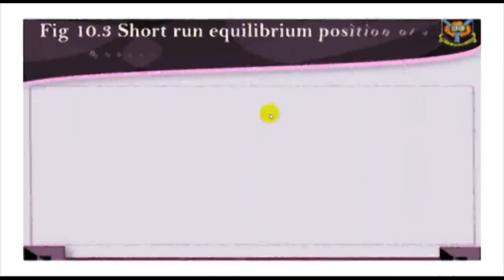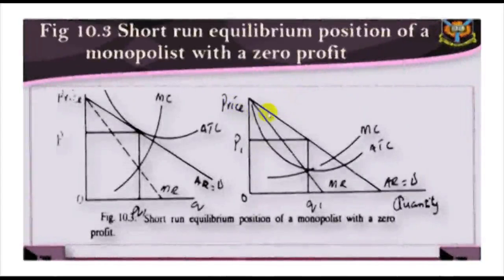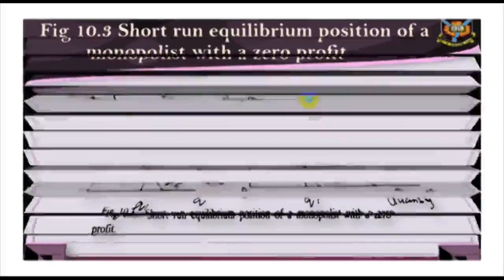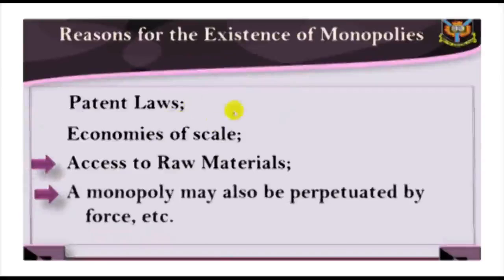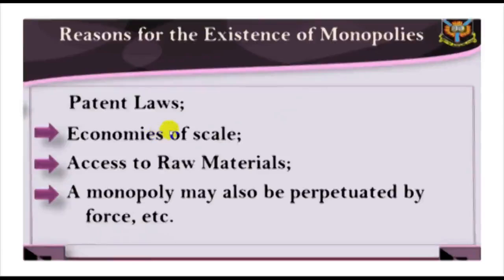A monopoly is the only producer in an industry; thus, there is no distinction between the firm and the industry. Unlike under perfect competition where there is no barrier to entry, the existence and continuous operation of a monopolist depends on its ability to bar other firms from entering the industry. There might not be as much difference between the short-run and long-run equilibrium position of the firm. If the firm is making profit in the short run, this can also extend into the long run if it can successfully discourage other firms from coming into the market.